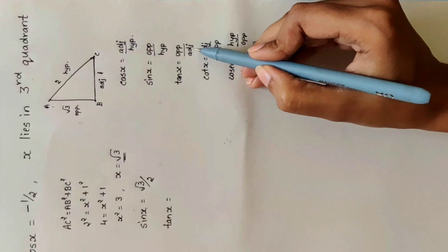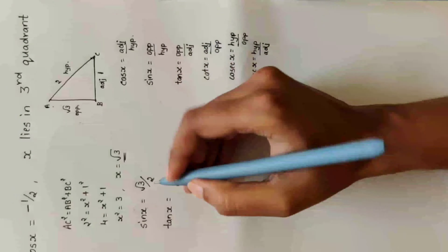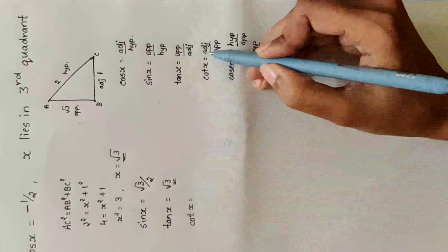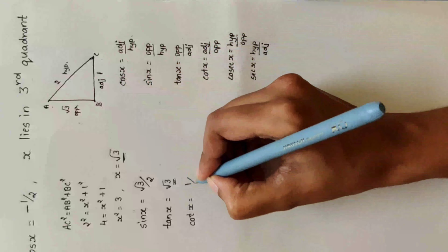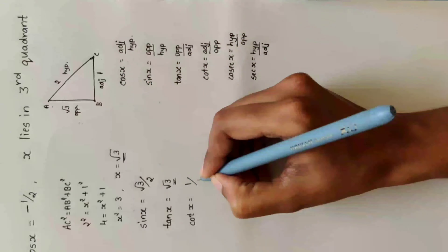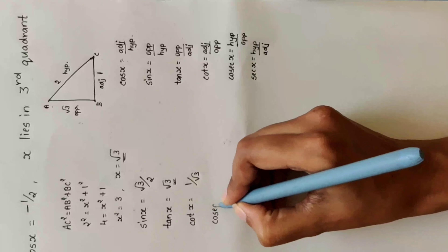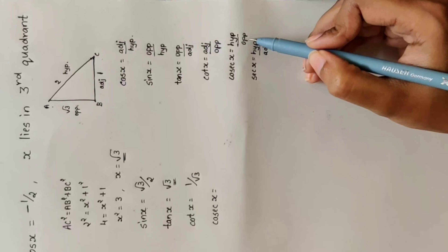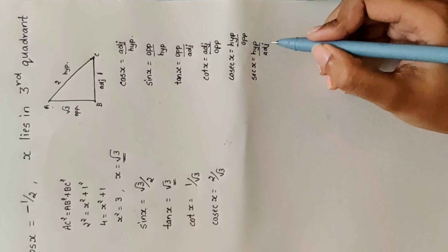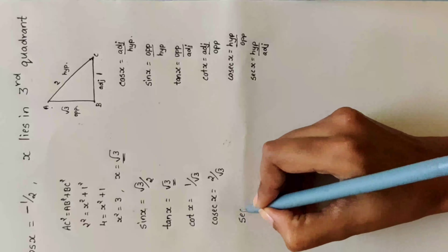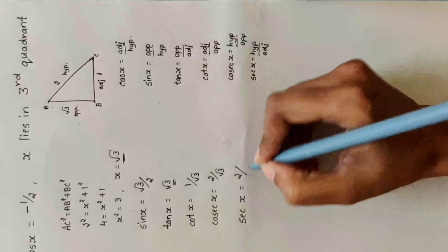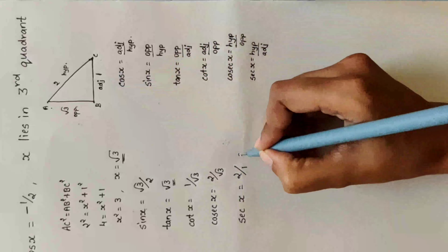Next, tan x = opposite divided by adjacent = √3 divided by 1 = √3. Cot x = adjacent divided by opposite = 1 divided by √3. Cosec x = hypotenuse divided by opposite = 2 divided by √3. Sec x = hypotenuse divided by adjacent = 2 divided by 1 = 2.